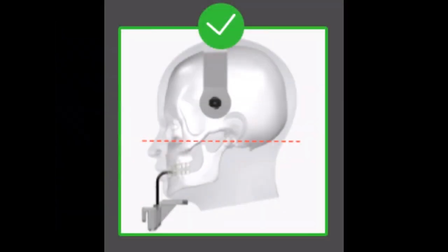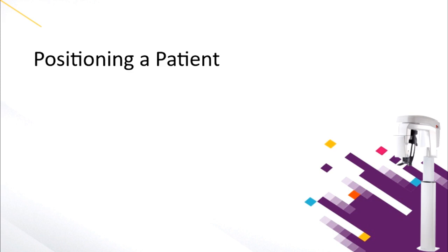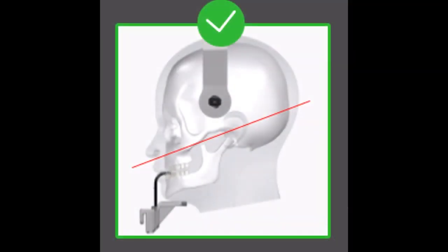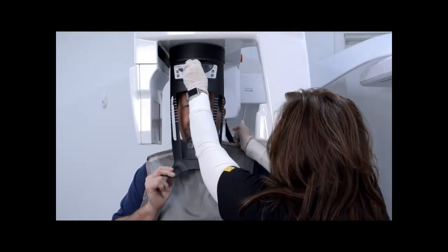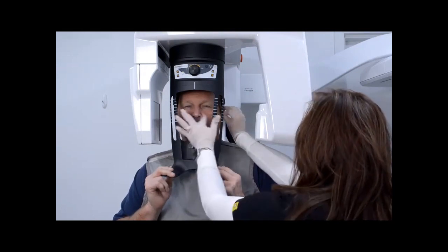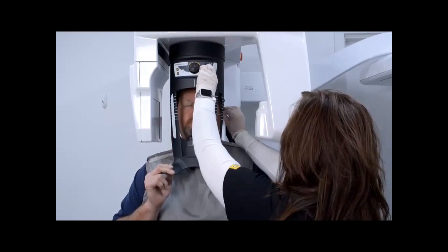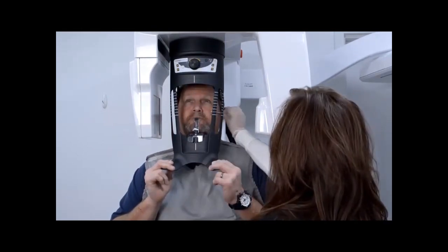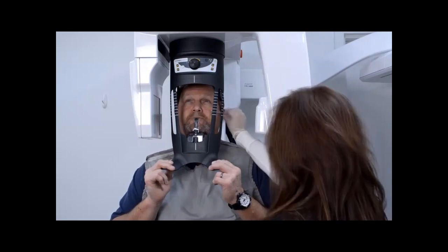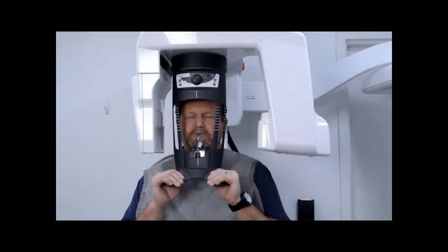The Frankfurt plane passes through the lower border of the orbital socket and the tragus of the ear. For the 2D Extraoral Bite Wing exam type, use the Horizontal Positioning Indicators as a visual aid to adjust the up/down inclination of the patient's head for a Camper plane horizontal alignment. The Camper plane passes through the lower border of the nose and the tragus of the ear. Using both hands, align the horizontal and vertical position of the head and ensure that the patient's midline is aligned with the spine. Ask the patient to close their eyes, remain still, and breathe through the nose. Instruct the patient not to swallow during the acquisition. Place the tongue on the palate.